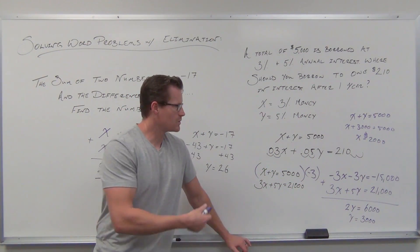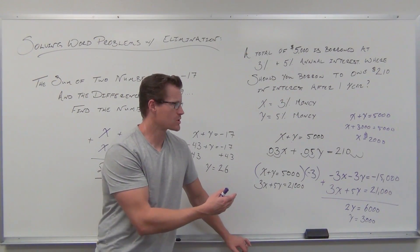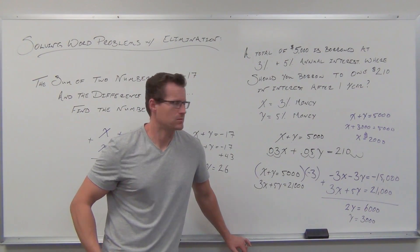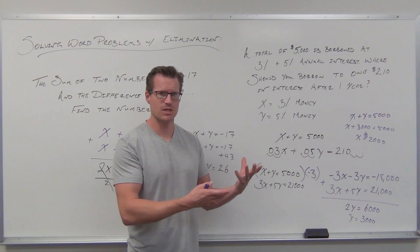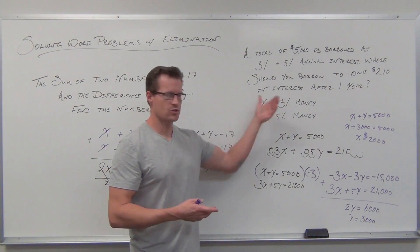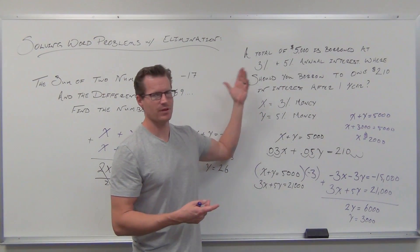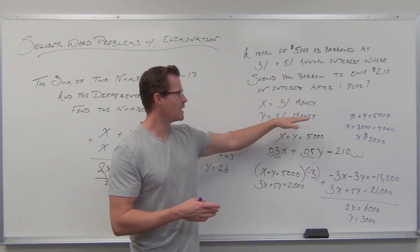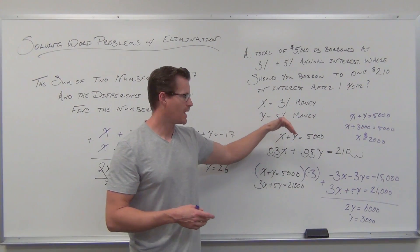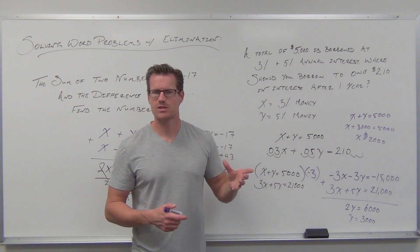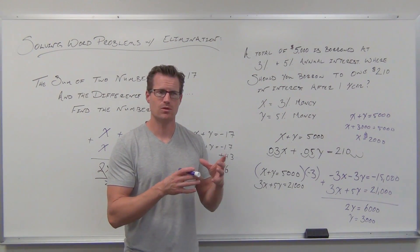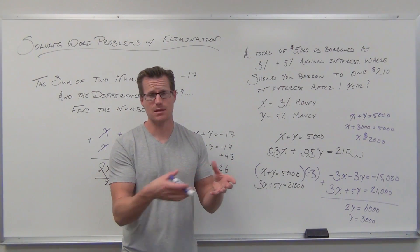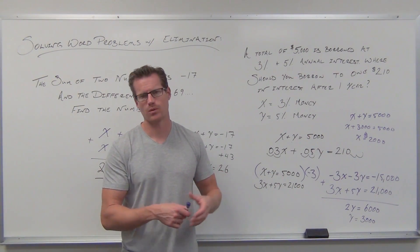Now we can answer the question. Give me a full sentence explaining what this is. Don't just say y = 3,000 and x = 2,000. How much should be invested at 3%? $2,000 should be borrowed at 3%, and $3,000 should be borrowed at 5%. Answer it in a way that makes sense to the average person where they could read what you have and make sense out of the word problem.